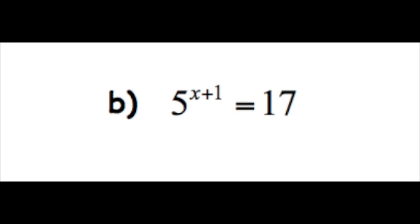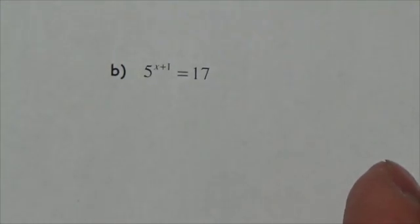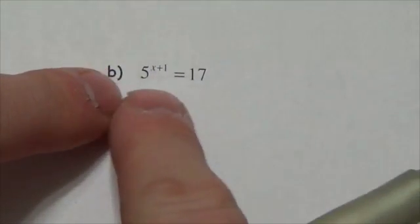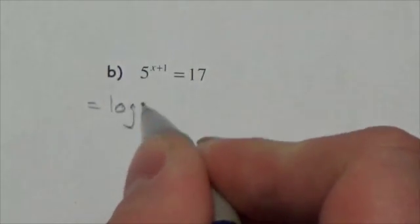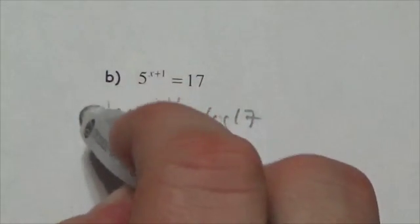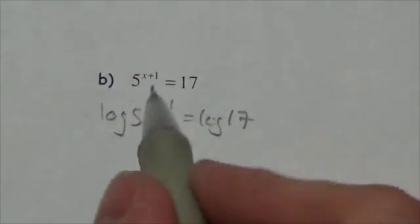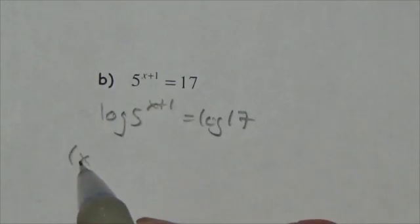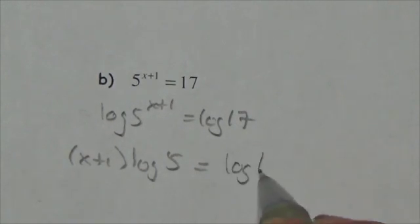Next: 5 to the x plus 1 is equal to 17. This is similar to the one we just did, except the exponent is a little more complicated, and I have to be careful about that. Again, there's no nice comparison between the bases, so I'll start by taking the log of both sides. Because both sides of the equation were equal, when I take the log they're going to be equal. When I bring down the exponent, I've got to remember that the exponent is that entire binomial — so (x+1) will be multiplied by log of 5, and that equals log of 17.